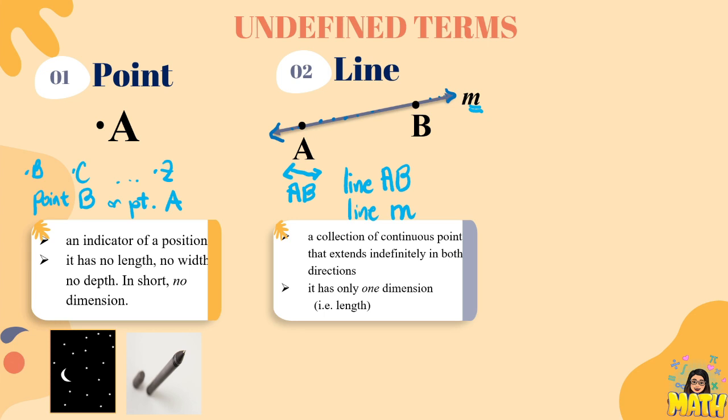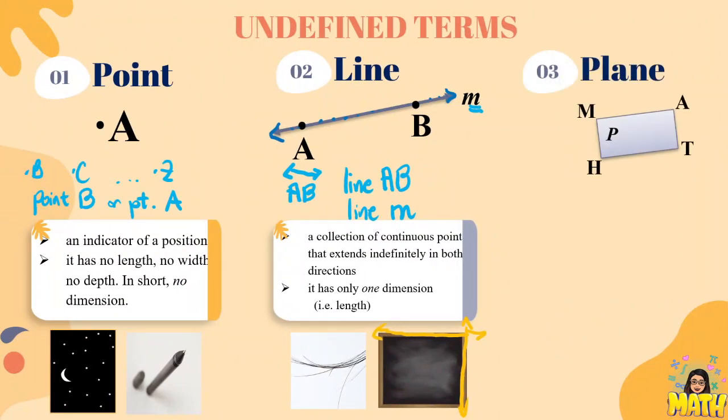Some concrete examples are the strands of a hair and the edge of a blackboard. Here, we have a horizontal line as well as the vertical line.